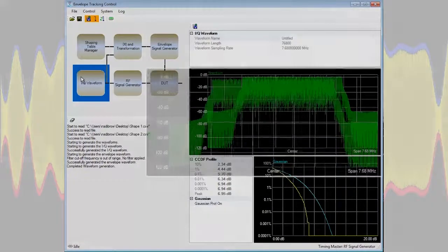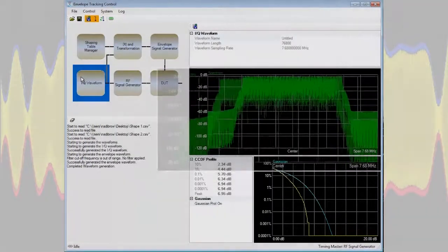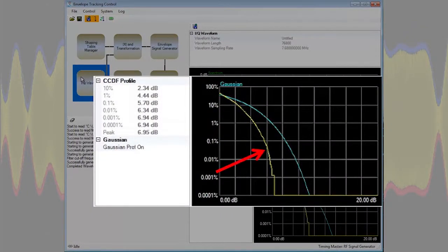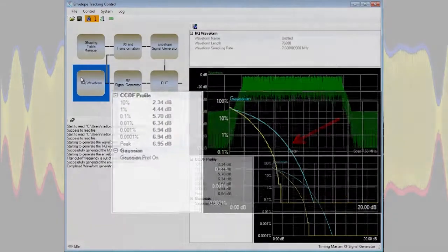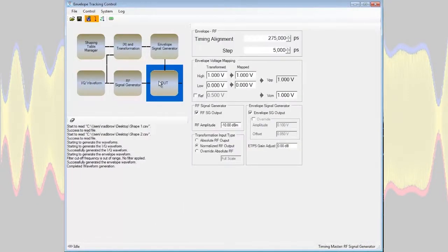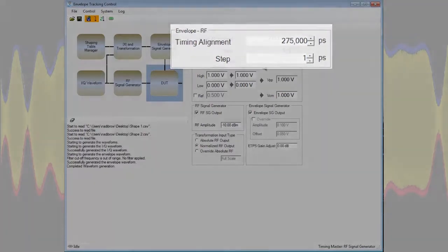Then if we look at this IQ waveform block I can see a spectrum of my RF signal as well as a part of the CCDF characteristics. So the yellow line there would be the actual signal we're simulating while the blue one would be the reference of white Gaussian noise. And then let's take a look at the last block here. So the first part is the timing alignment. This is how I set the alignment between the RF signal and the envelope signal. And I can set this with a resolution of one picosecond.